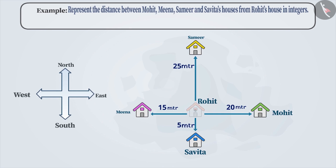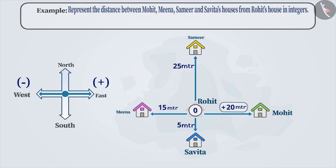Therefore, we represent Rohit's house as 0. In this example, we represent the distance towards the east by a positive sign and its opposite direction, i.e. west, by a negative sign. Therefore, the distance from Rohit's house to Mohit's house is plus 20 meters, and the distance from Rohit's house to Meena's house is minus 15 meters.